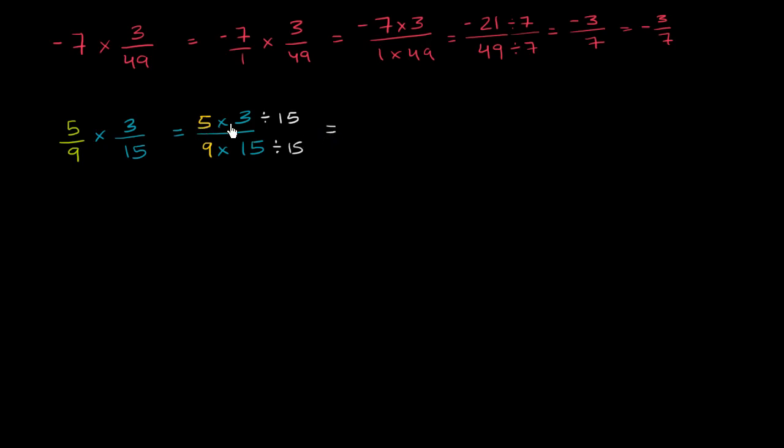And this is going to be equal to, well, 5 times 3 is 15, divided by 15 you get 1 in the numerator. And in the denominator, 9 times 15 divided by 15, well, that's just going to be 9. So it's equal to 1 ninth.